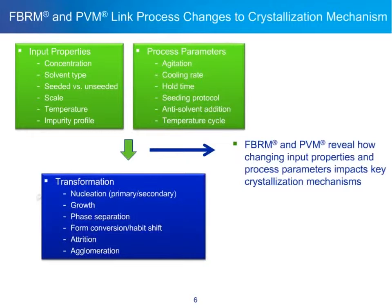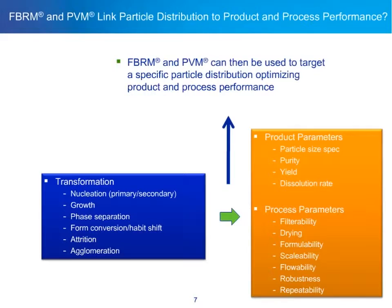FBRM and PVM reveal how changing the input properties and process parameters impact key crystallization mechanisms. And FBRM and PVM can be used to target a specific particle distribution to optimize product and process performance. In all the examples today, we'll identify what input properties and process parameters are being changed, how this impacts the transformation, and what the downstream result is for the product and process.